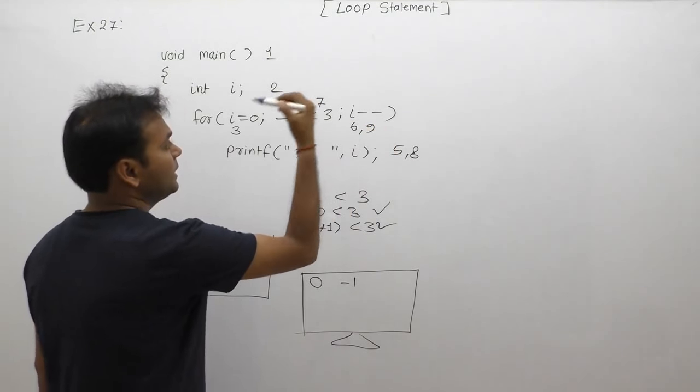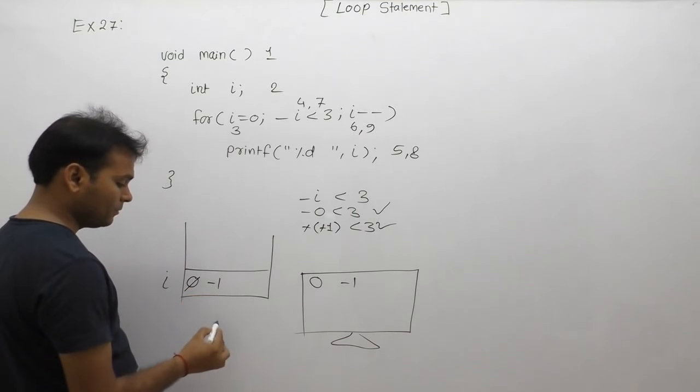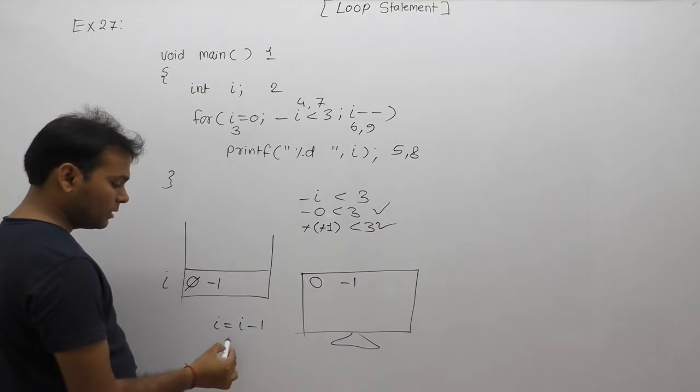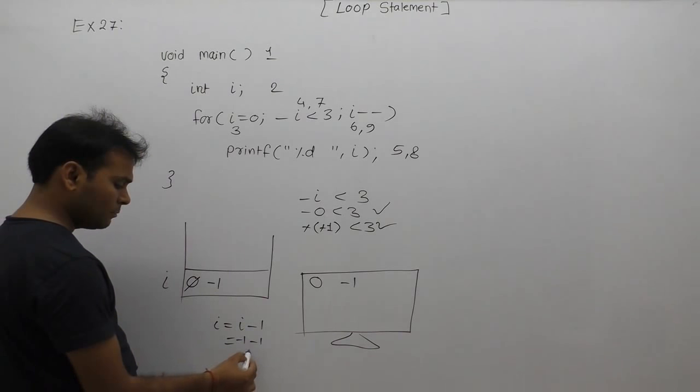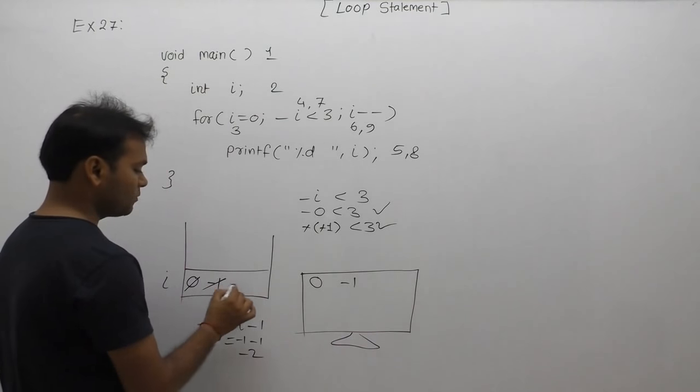Again eighth case to ninth case increment/decrement section. i minus minus, i's value is already minus 1. i's value already minus 1 minus 1 equals minus 2. Minus 2 is assigned to i. Value of i becomes minus 2.